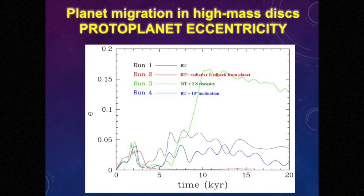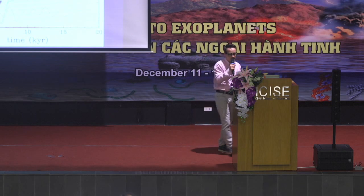This is eccentricity versus time — you get something like 0.1 in some cases, 0.15. But in the case when the feedback from the planet is included, this stabilizes the disk. The interactions between the planet and the disk are more regular in a way, so the red line gives you an almost circular planet.